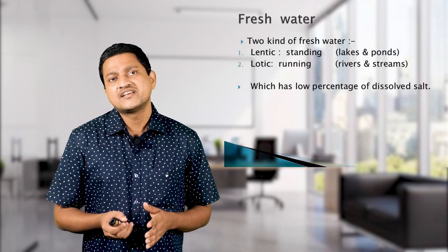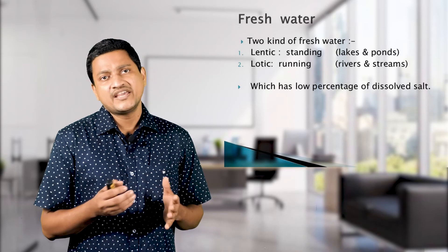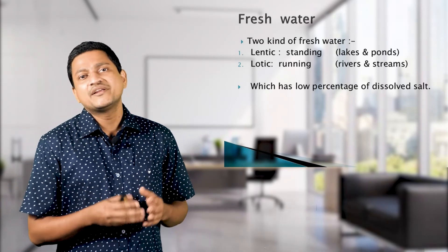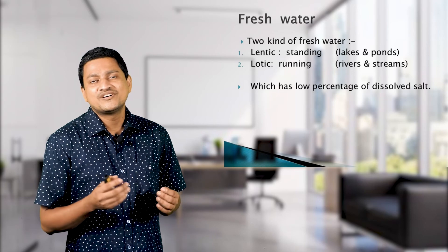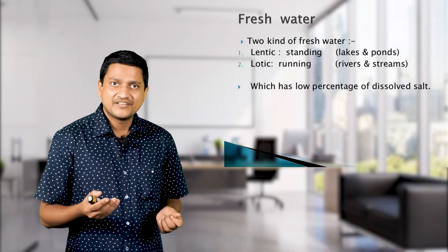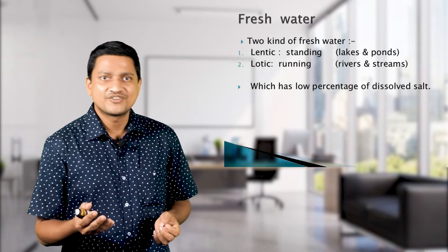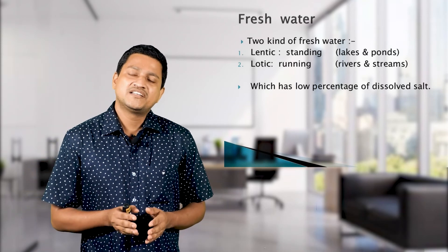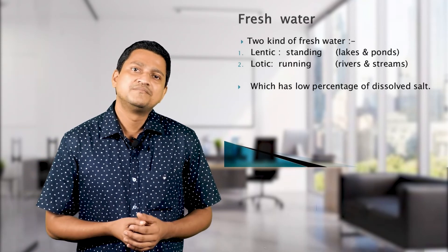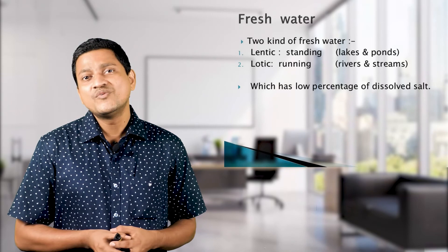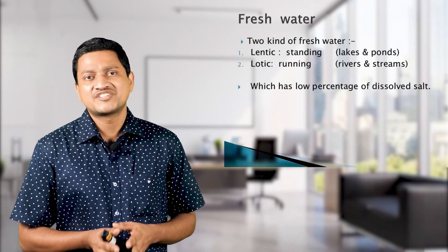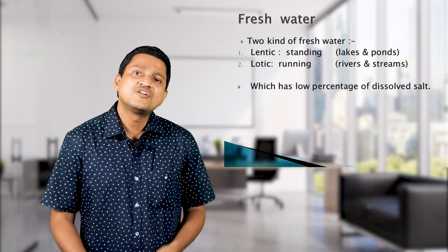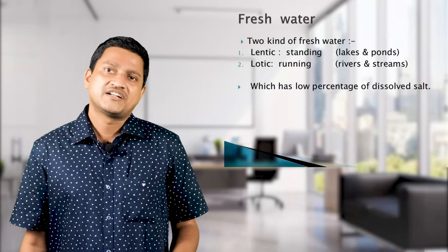The second kind of freshwater ecosystem is lotic. Lotic means running water — water that flows. Examples of lotic systems are rivers and streams. Freshwater systems have a low percentage of dissolved salts.